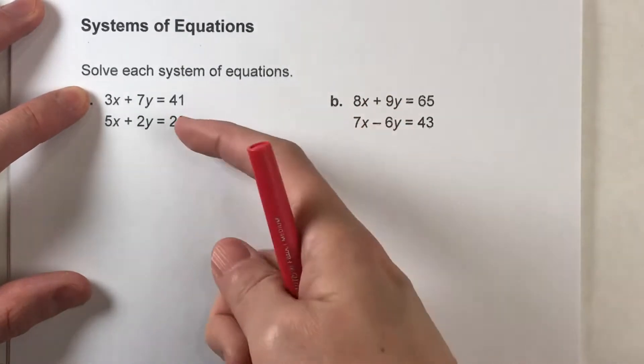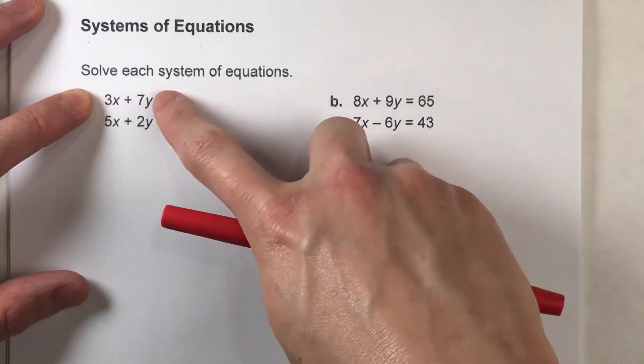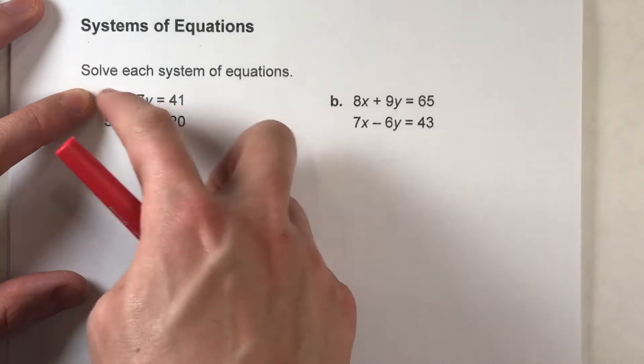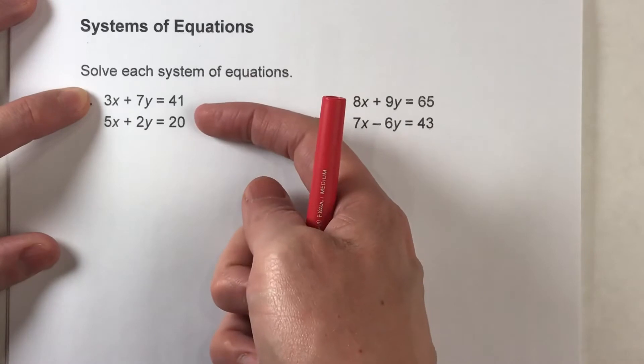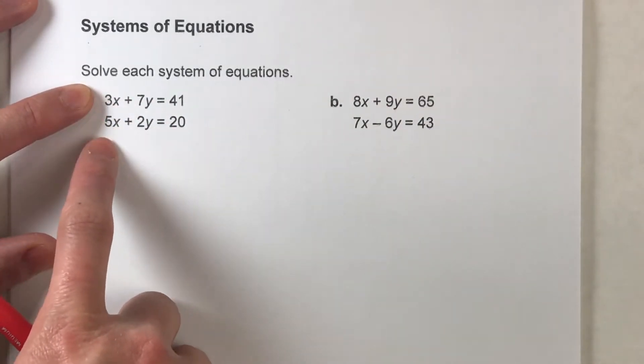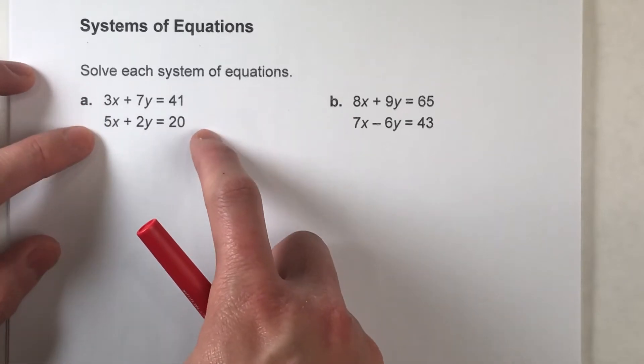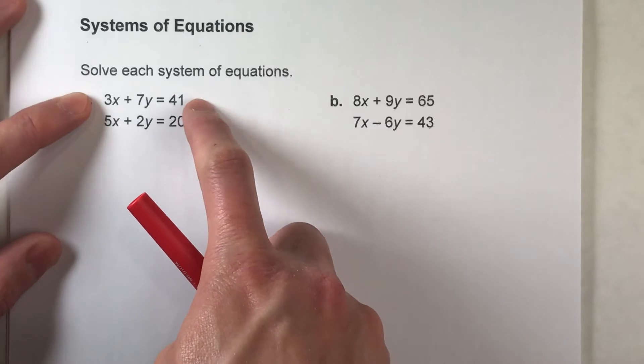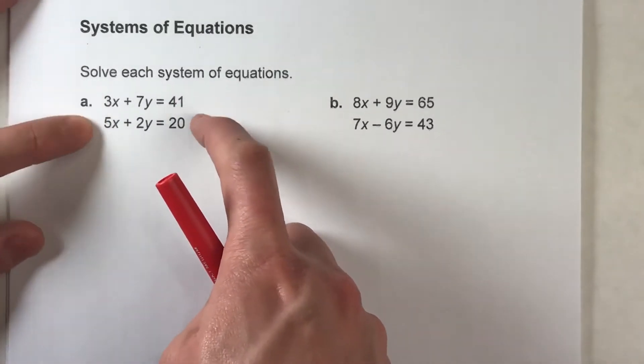Up until now, when we were solving a system of equations when they were both in standard form, the numbers in front of x or y either matched up, or we could just multiply one of the equations by a number and then they would match up. But notice in this situation right here, there's no matching numbers next to the x's, there's no matching numbers next to the y, and we can't simply multiply one of these equations by a number. I mean, we could multiply it by like a fraction or decimal and get the other one, but there's no simple whole number we can do.